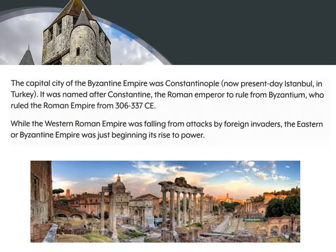The capital city of the Byzantine Empire was Constantinople. If you search for Constantinople on the world map today, you won't find it — its present-day name has been changed to Istanbul, which is in Turkey. It was named after Constantine, the Roman Emperor who ruled this region of Byzantine from 306 to 337 CE.